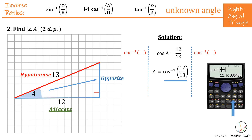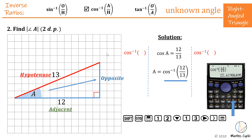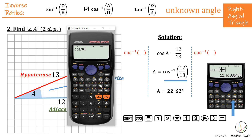Put that straight into the calculator using cosine inverse: shift cosine, then use your ratio button — type 12, arrow down, type 13, come out of the denominator, close brackets, equals. You get 22.61986495. The question asks for two decimal places — after .61 I have a 9, so I round up to .62. The answer is 22.62 degrees.